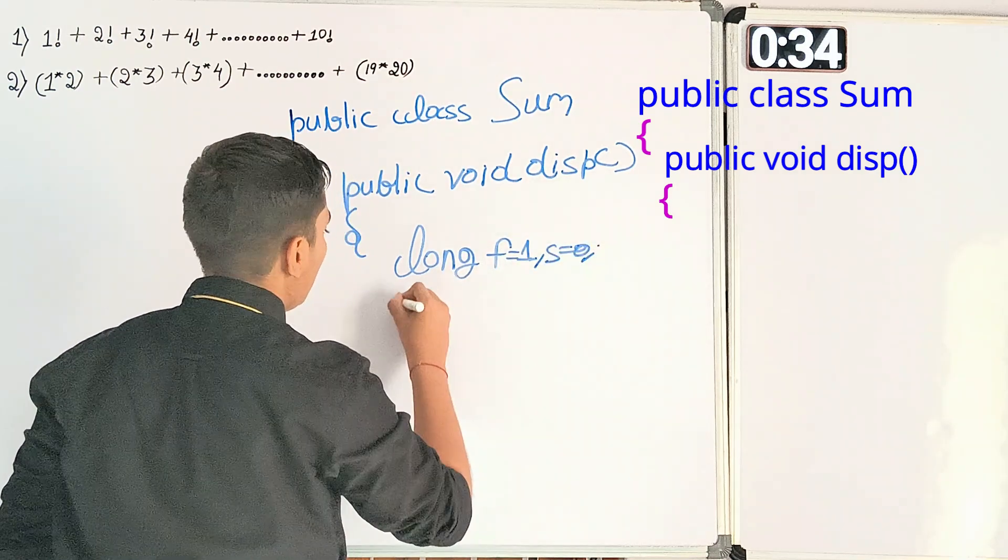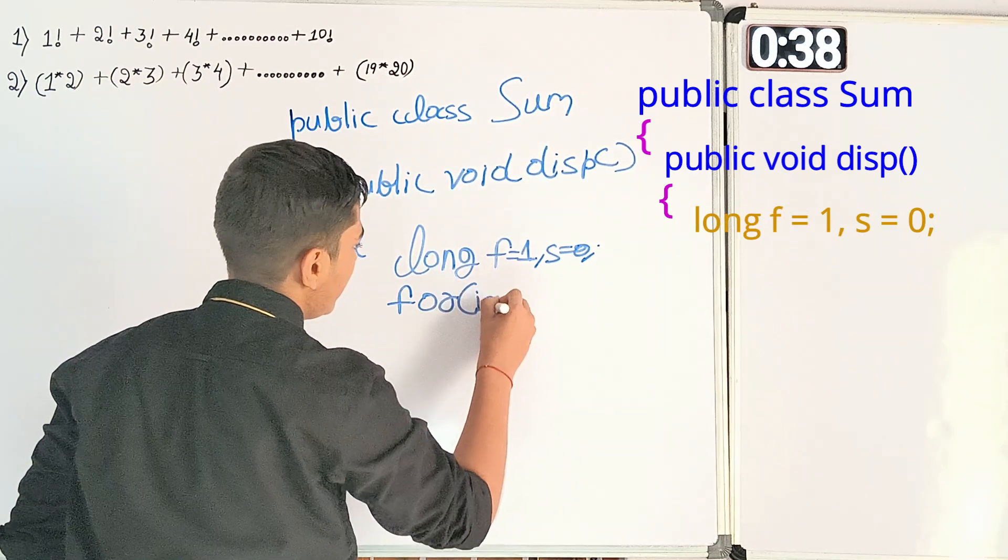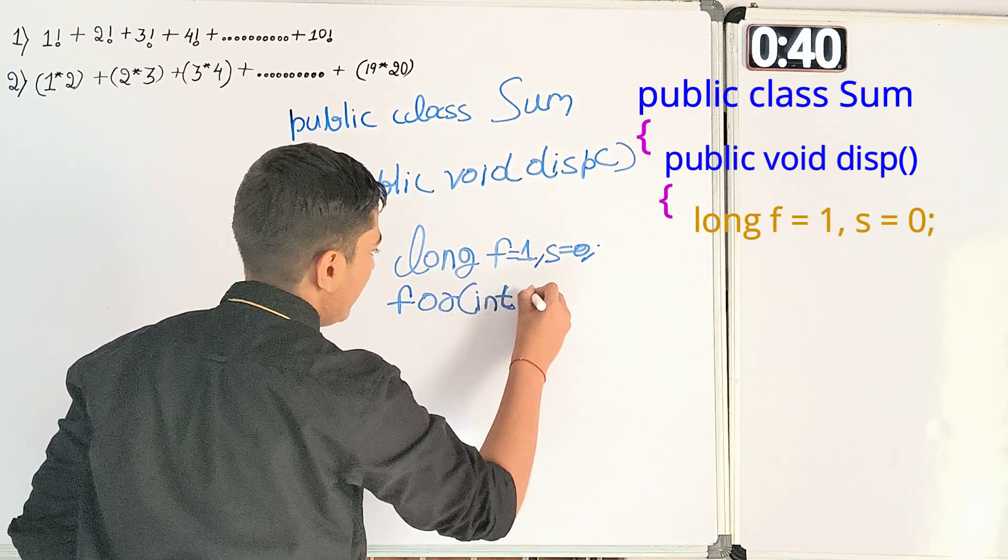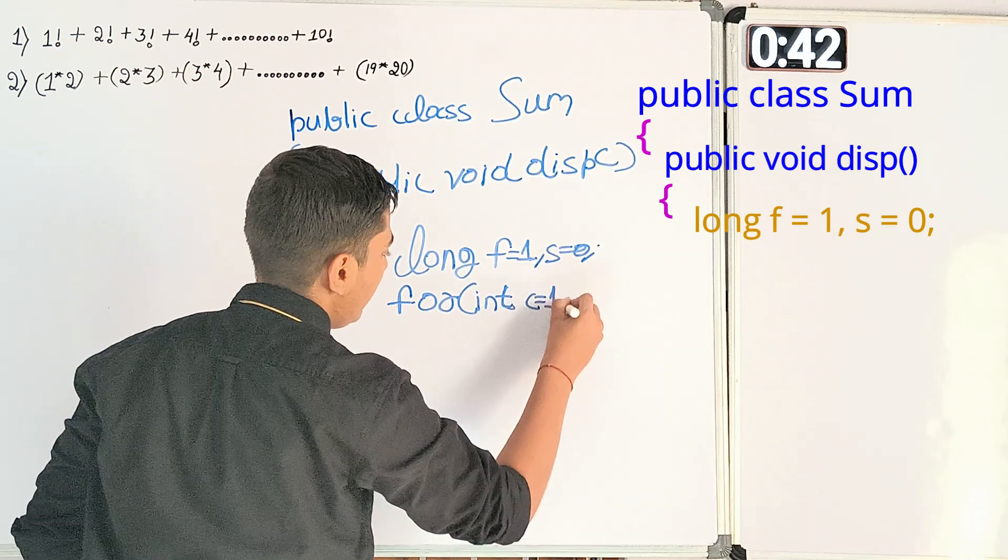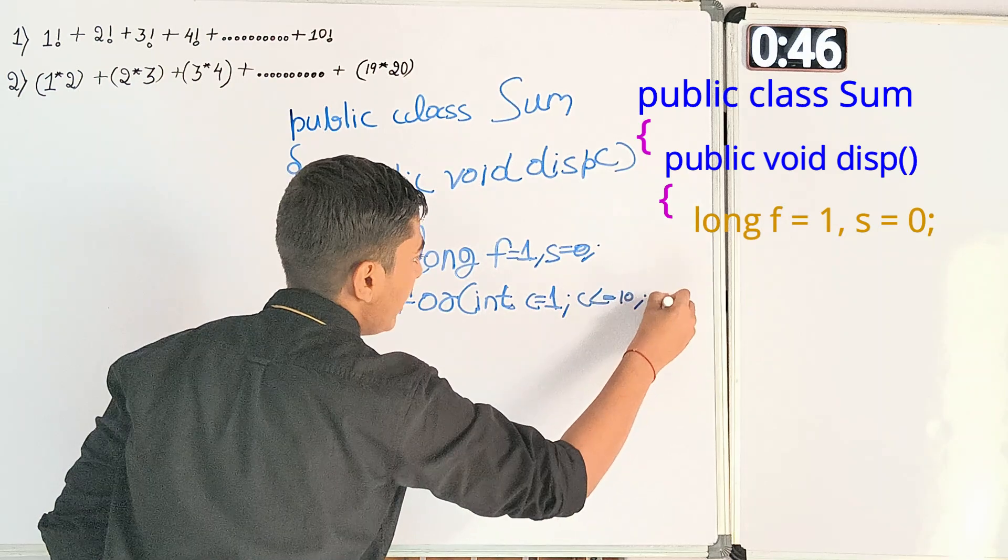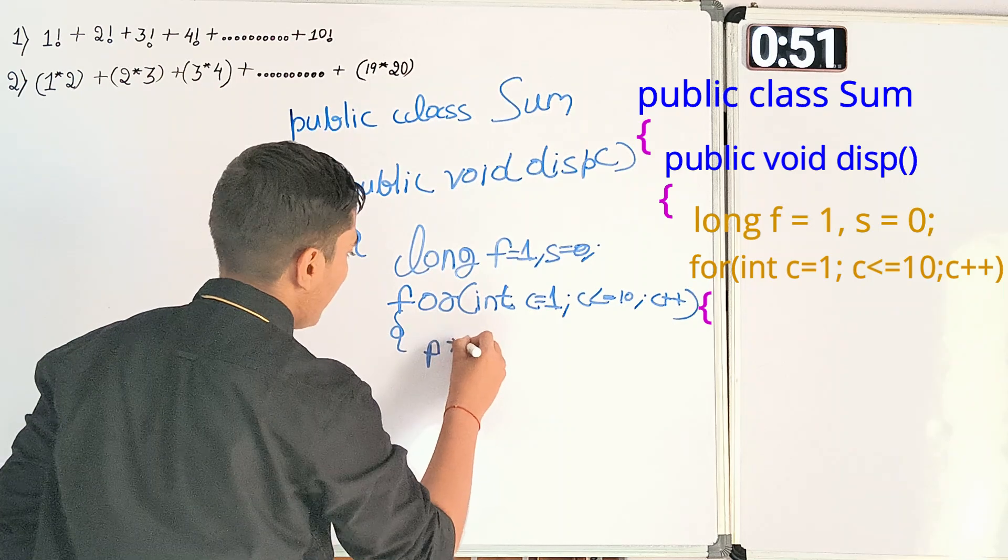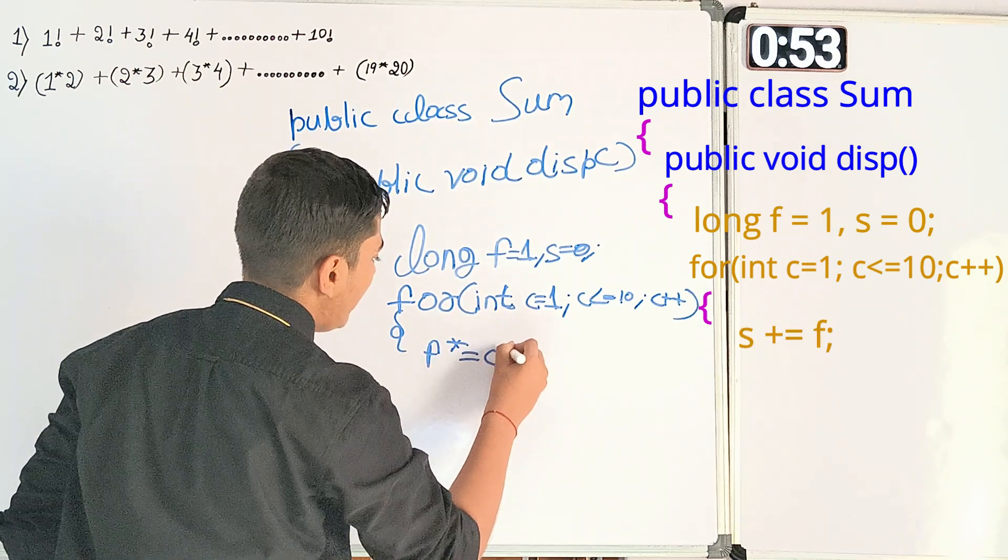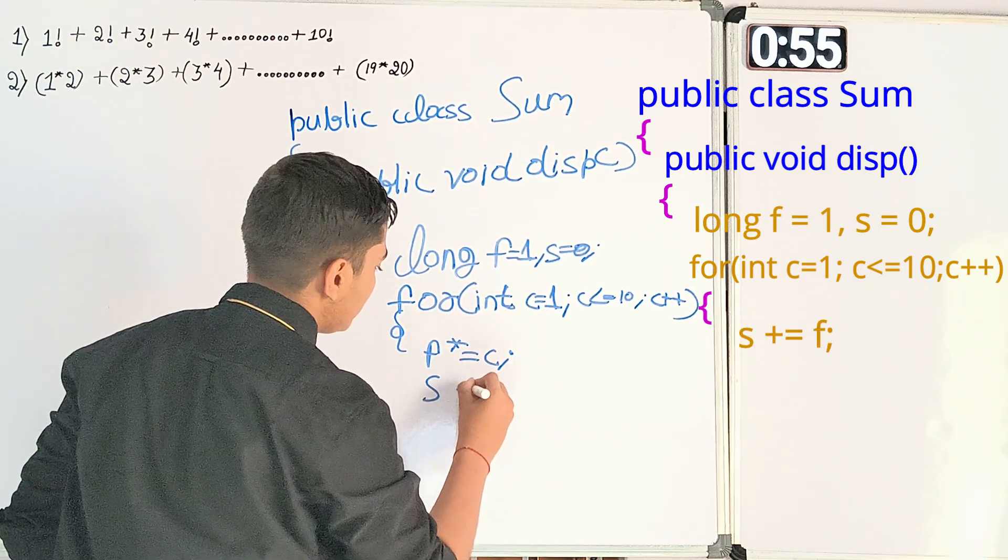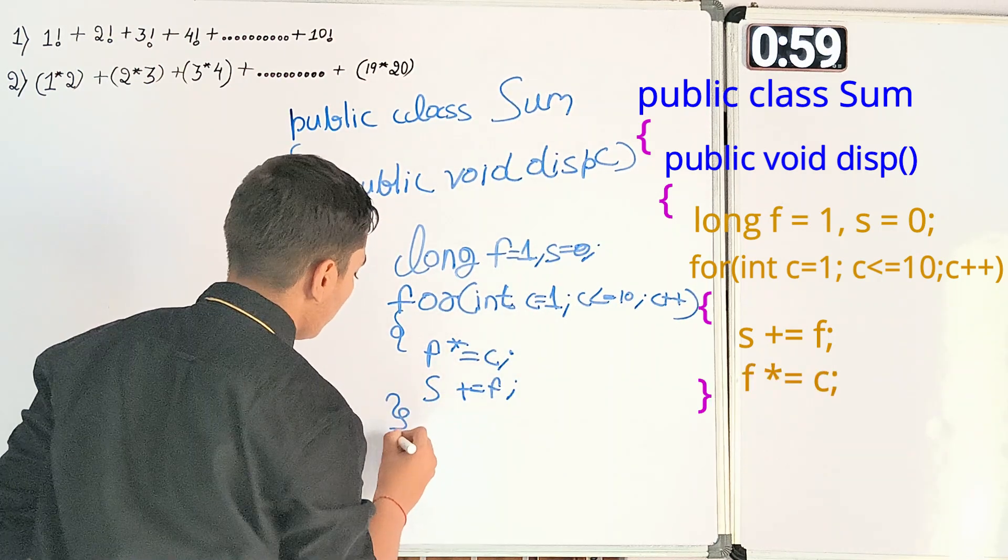And taking the help of the for loop with the variable c having initially 1 goes till 10 updating itself by 1. Now opening scope for for loop. We are doing the operation of f into is equal to c to find the factorial and s plus is equal to f to find the sum of the factorial. Now closing scope for loop.